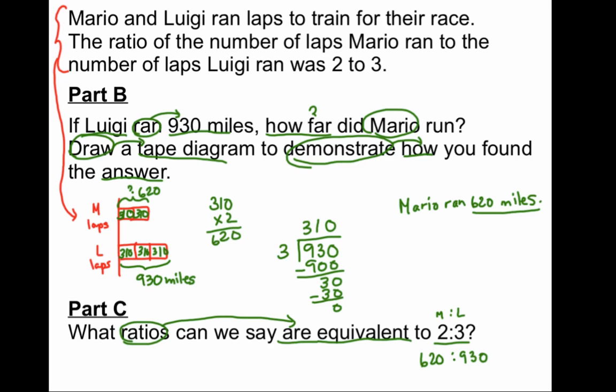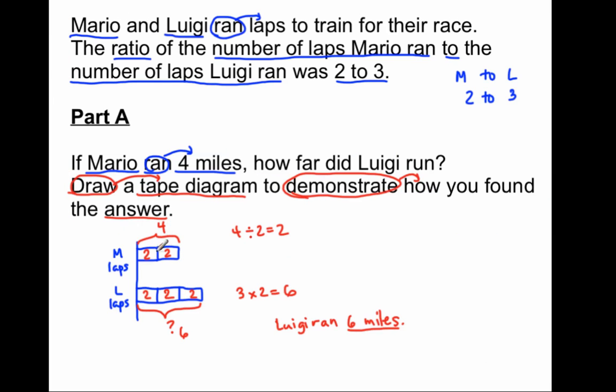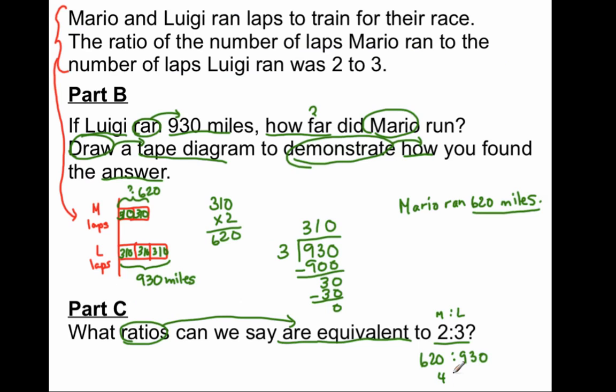Let's see if we can get one more from our previous tape diagram. We have Mario to Luigi, 4 to 6 is also equivalent to 2 to 3. So, another ratio that's equivalent to 2 to 3 is 4 to 6. I hope that you learned how to use tape diagrams to solve equivalent ratio problems through the visual drawing. Thank you, and let's go to the next video, which is going to describe just the math way, without drawing a picture, of how to find equivalent ratios.